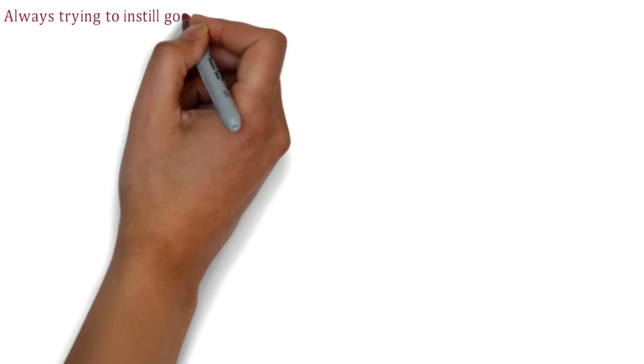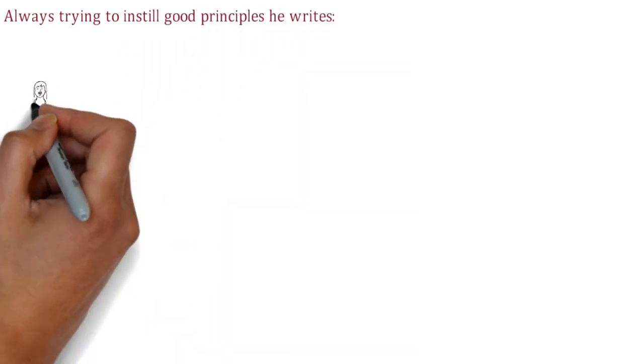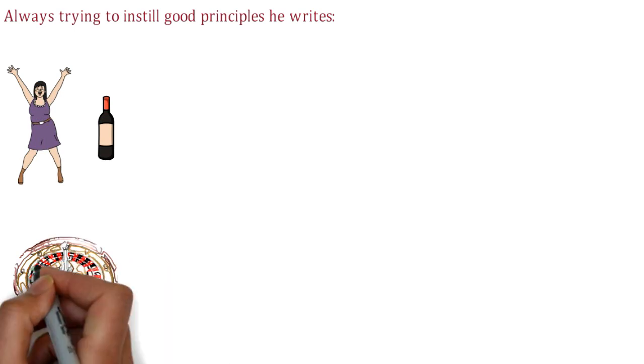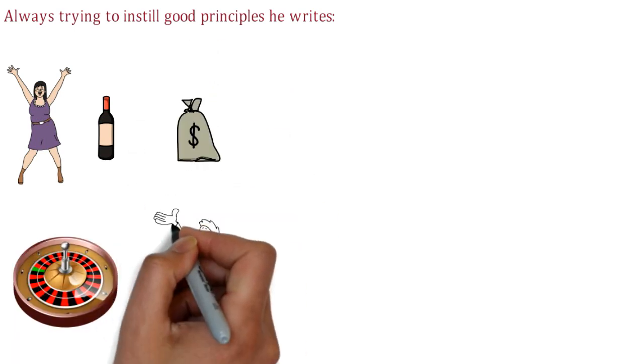Always trying to instill good principles, he writes: Women and wine, game and deceit make the wealth small and the want great.